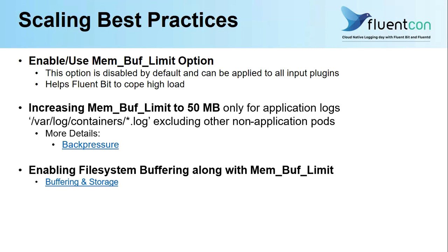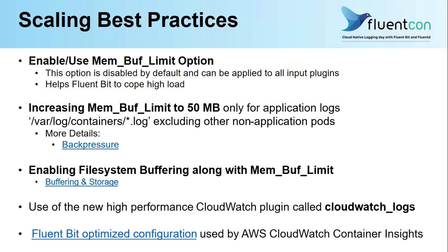Along with memory buffer limit, you can also enable filesystem buffering. This will help deliver logs at large scale and will ensure data and log integrity in case your log destination is not able to cope with the load or there is any technical problem on the destination side. For CloudWatch Logs, we recommend using the high-performance CloudWatch Logs plugin called 'cloudwatch_logs'. Based on all this, we have an optimized Fluentbit configuration in our Container Insights page — I recommend you review this configuration and make your Fluentbit configuration as close as possible to it.